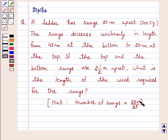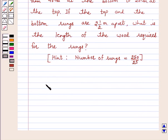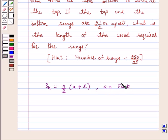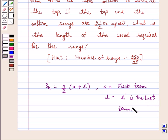Hint: the number of rungs is equal to 250 divided by 25. Now, we know that the sum of the first N terms of an AP is Sn = N/2 × (A + L), where A is the first term and L is the last term. If the first and the last term of an AP are given, the sum of its first N terms is given by this formula. This is the key idea behind this question, and we will use it to solve the problem.